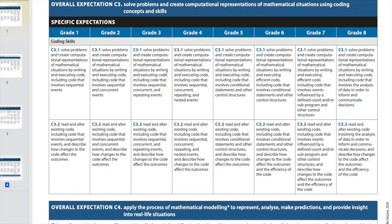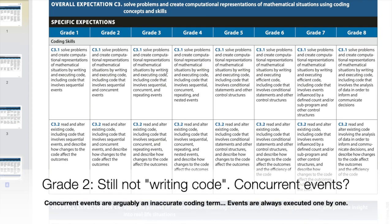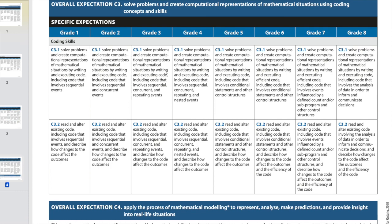Grade two again is not writing or executing code, so you can mostly ignore the top two-thirds of the expectation. It introduces concurrent events, which in computer science terms is kind of nonsensical — computers don't truly do things at the same time. Even when it seems like things are running simultaneously, the computer is really just executing one instruction really fast after another. You can have multi-threading or multiple processors, but grade two is definitely not doing any of that.